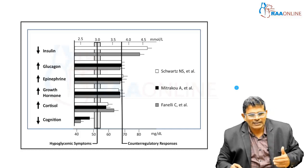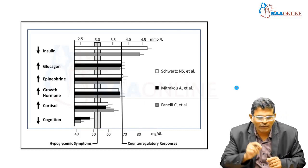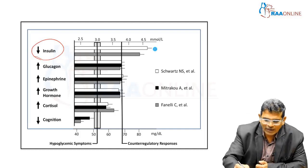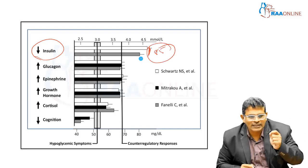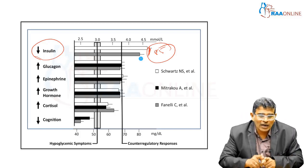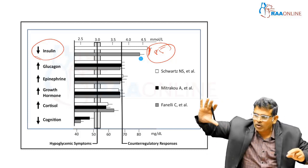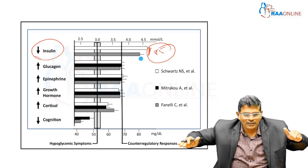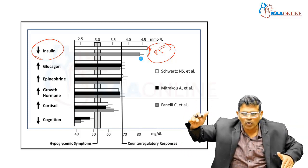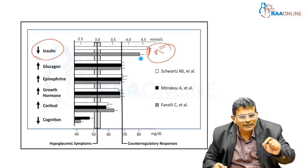Whenever blood sugar decreases, the first thing that happens is the insulin level comes down — this is the first response. This happens even at levels below 90–85. Whenever less insulin is being produced, the glucagon level also increases. The two important things are: insulin decreases, and its counter-regulatory hormone glucagon increases. They work in a see-saw manner — when one comes down, the other goes up.